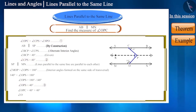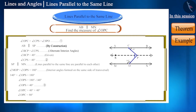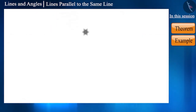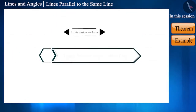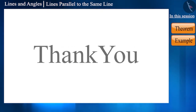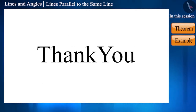Now by placing the values of both angles into equation 1, we can find the value of angle OPC, which gives us 80 degrees. That's all for this session. Today we discussed some properties of lines parallel to the same line. See you in the next video, thank you.